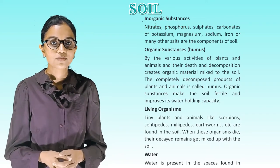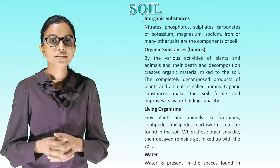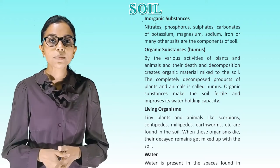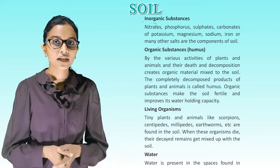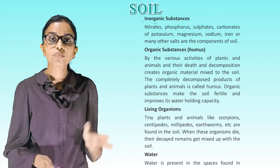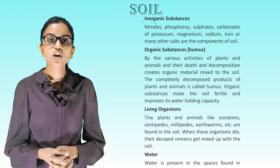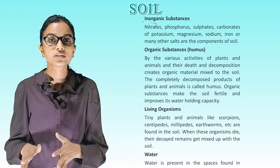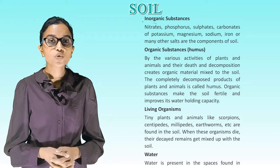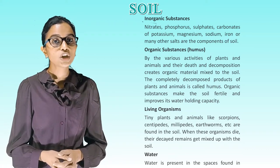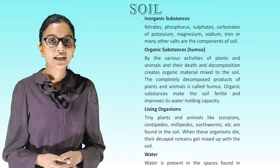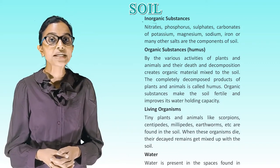Inorganic substances include nitrate, phosphorus, sulfate, carbonates, potassium, magnesium, sodium, iron and many other salts. Organic substances — humus — are created by the activities, death and decomposition of plants and animals. The completely decomposed products of plants and animals are called humus. Organic substances make the soil fertile and improve its water holding capacity.